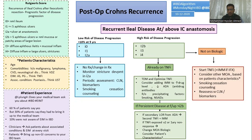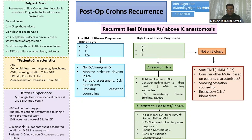In patients with high-risk disease progression — i2b, i3, or i4 — which may have complications and strictures, we have to ask ourselves one key question: is the patient already on biologics or not? And if already on biologics, which type?